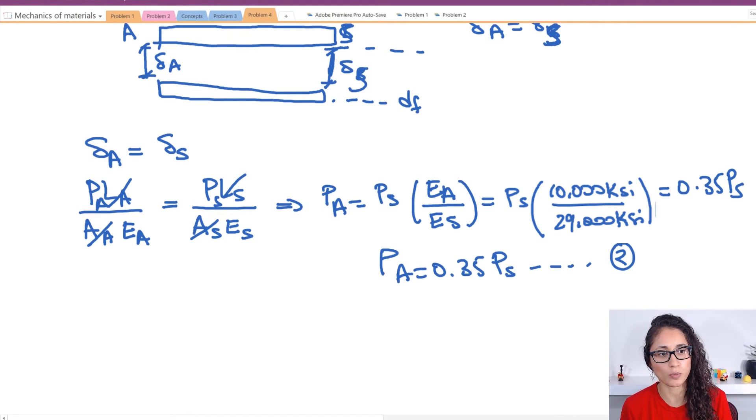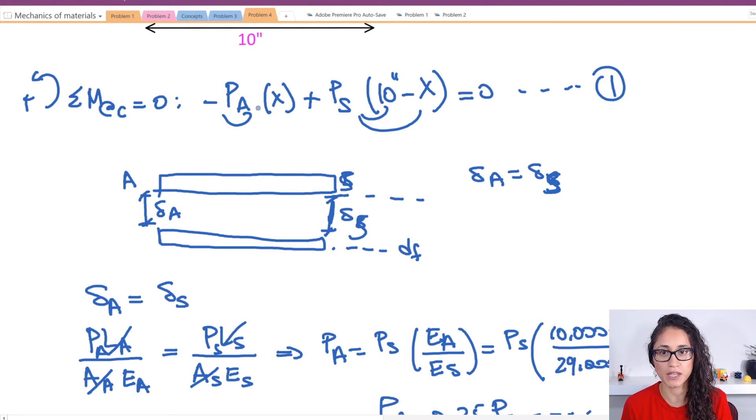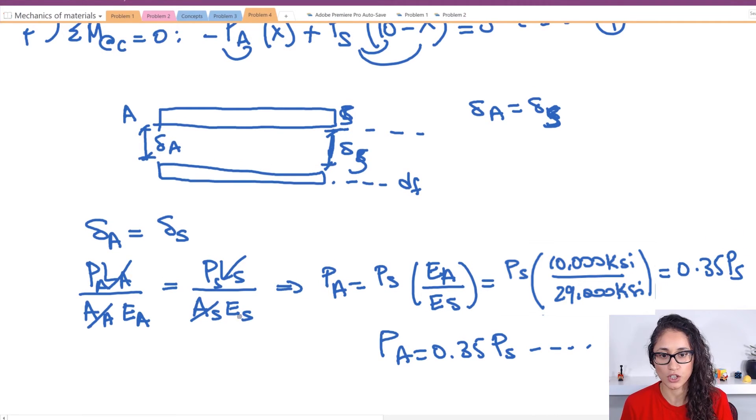Now we can go back to our first equation and plug in PA with PS and then we'll have less unknowns. So I have minus 0.35 PS times X plus 10 PS minus PS times X and this is equal to zero.